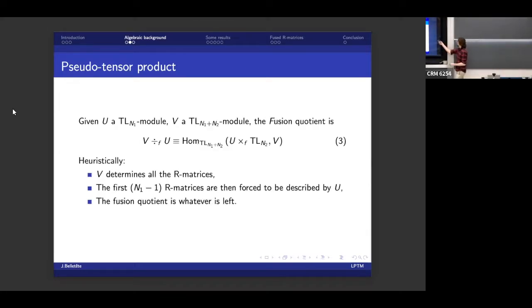So this is the simplest construction that you can do. But you can do another one, which I call the fusion quotient. So it's another fairly abstract construction. So I take the space of linear maps from the fusion of U with the entire algebra, TL_{N_2}, into some other module. So if you're not into algebra, you might be surprised to learn that this thing is still a module for TL_{N_2}. But the heuristic version of this is also pretty simple.